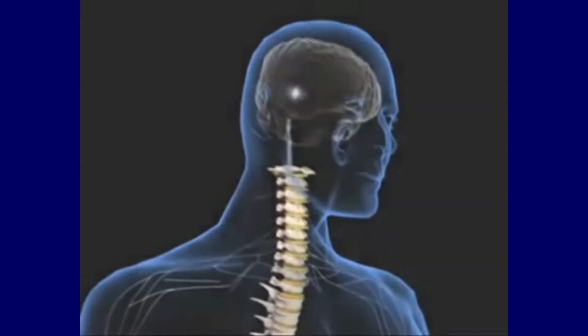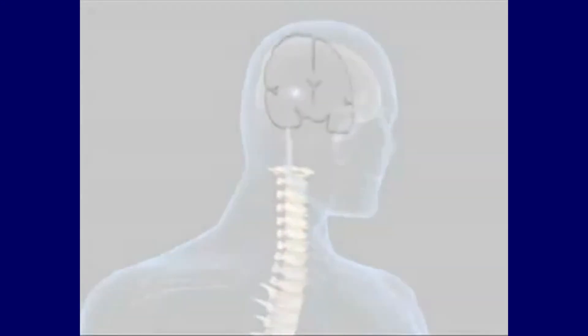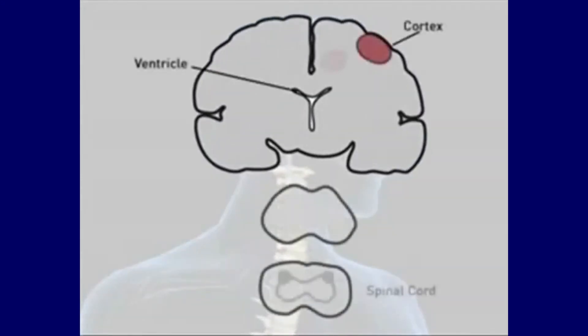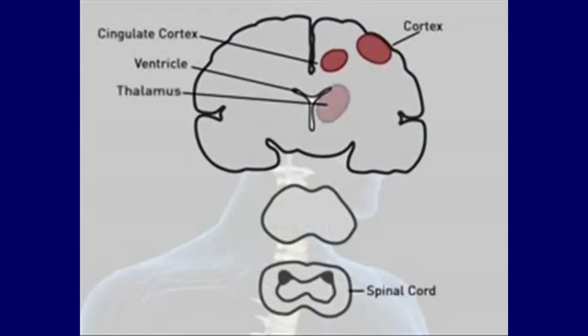Eventually, the pain signal travels up through the spinal cord and reaches parts of the brain — first the thalamus, and then out to the cortex.